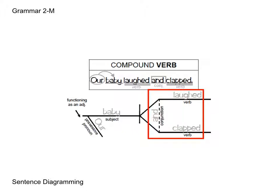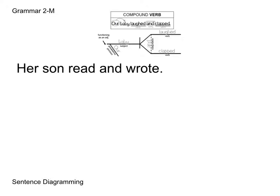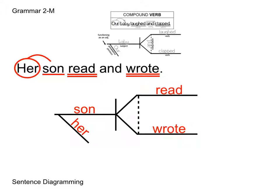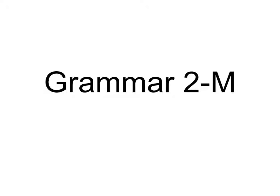Now let's diagram a sentence ourselves: "Her son read and wrote." We set up the structure, then fill it in starting with the subject, which is "son." The word "her" describes "son," so it goes on the diagonal line connected to the subject. Then we put in the verbs "read" and "wrote," joining them together with the conjunction "and." If you have any questions over this booklet, please contact the person who grades your grammar.